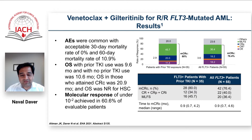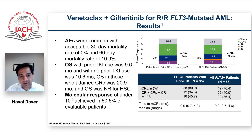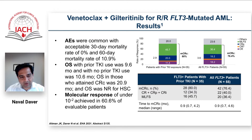A couple of important things from this study: the majority of patients — 65% to 70% — had received a prior FLT3 TKI such as midostaurin or sorafenib with their prior chemotherapies. So this was quite a difficult population, actually more difficult than ADMIRAL where 90% had not received a prior TKI before getting gilteritinib. The second important point is molecular clearance — 60% compared to about 20% molecular clearance published with gilteritinib alone — which is quite encouraging.